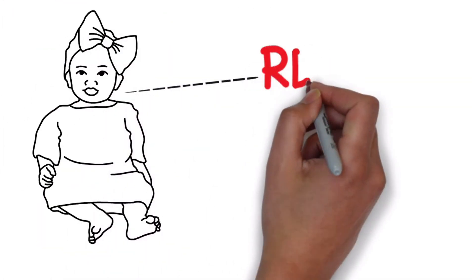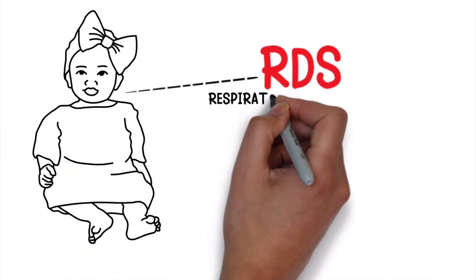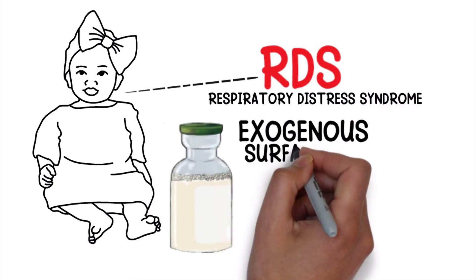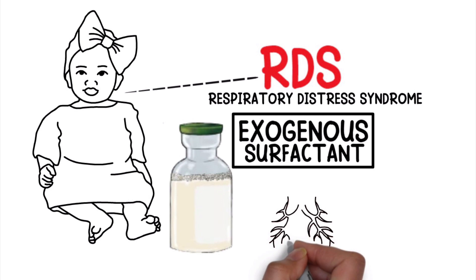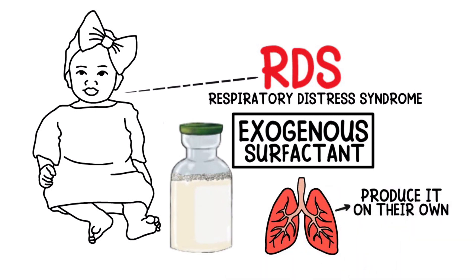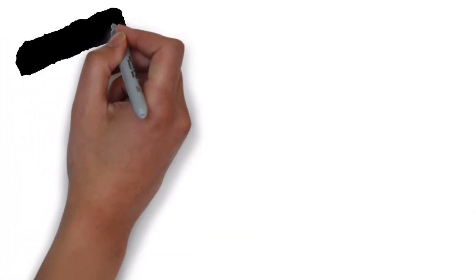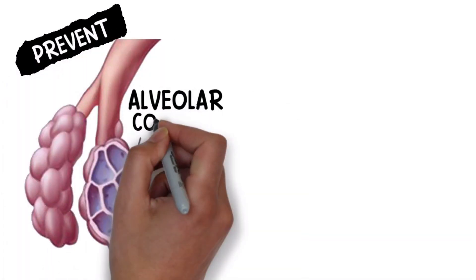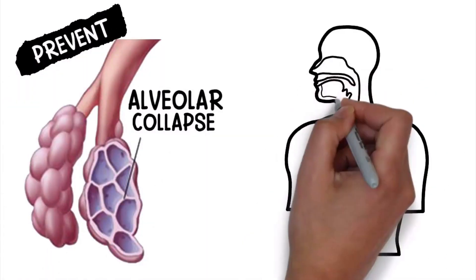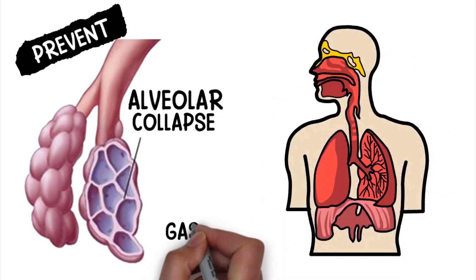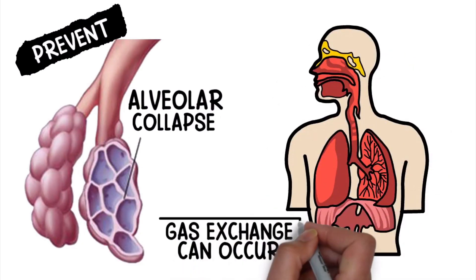It's most often indicated in infants with RDS, which stands for respiratory distress syndrome. Infants with this condition usually require the administration of exogenous surfactant until their lungs mature enough to produce it on their own. In general, surfactant helps prevent alveolar collapse during exhalation, which reduces work of breathing. It increases lung compliance and optimizes the surface area so that gas exchange can occur.